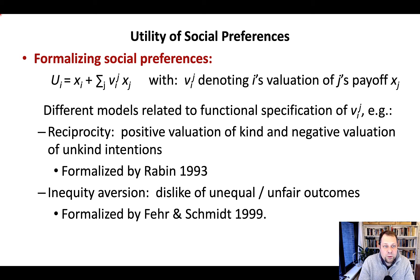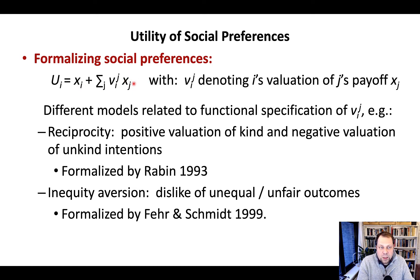In economics, we have a number of ways of formalizing social preferences. One way is to say that the utility person i assigns to an interaction depends not only on their own outcome x_i, but also on the outcome that other people in the game receive — x_j. There can be multiple j's involved, for instance in the public goods game. There is also an additional weighting of the outcome for others.